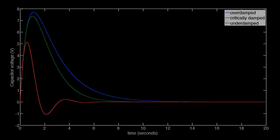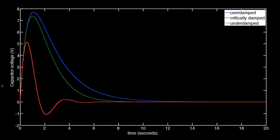For those same circuits, here are three plots of the capacitor voltage as a function of time. The blue again is the overdamped situation, the green is critically damped, and the red corresponds to the underdamped case.